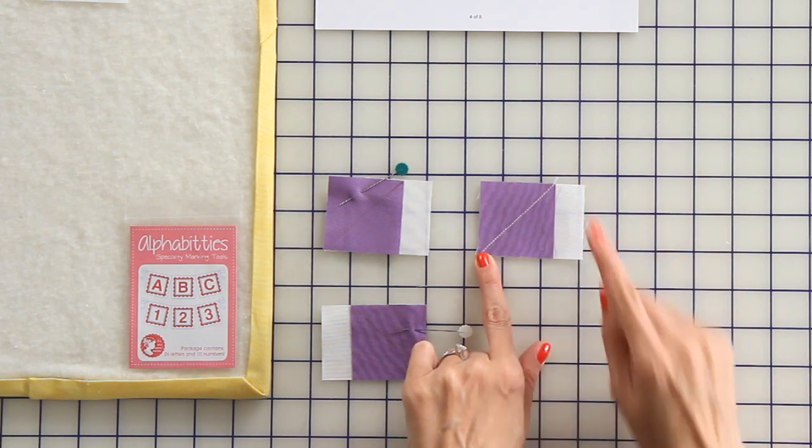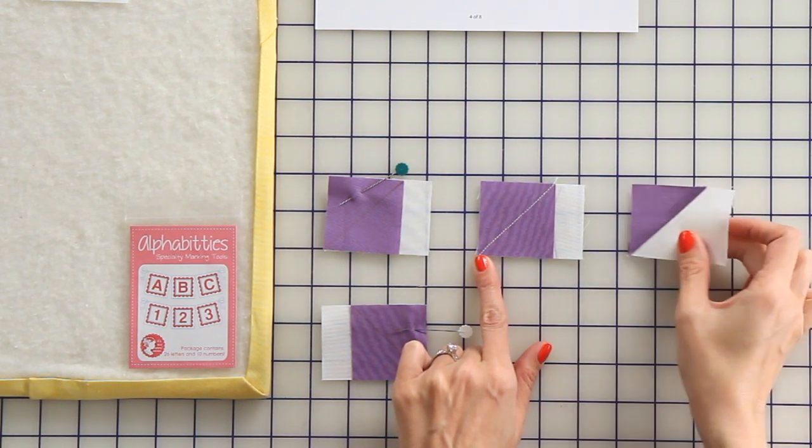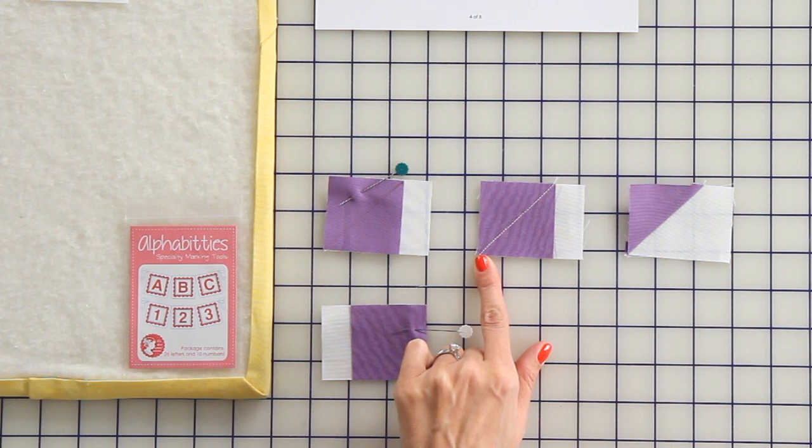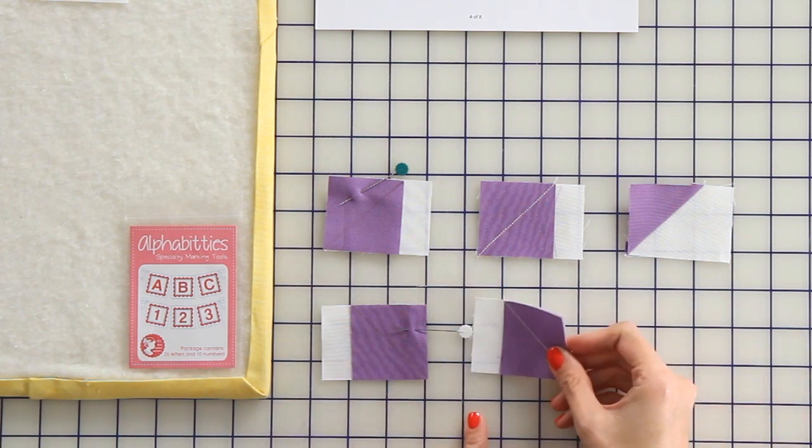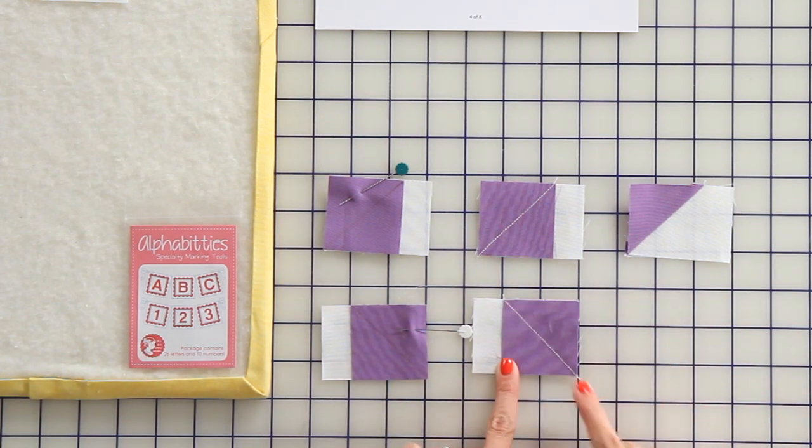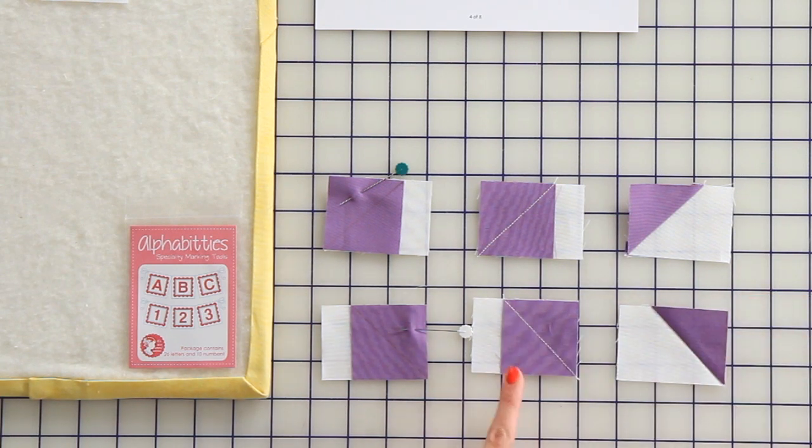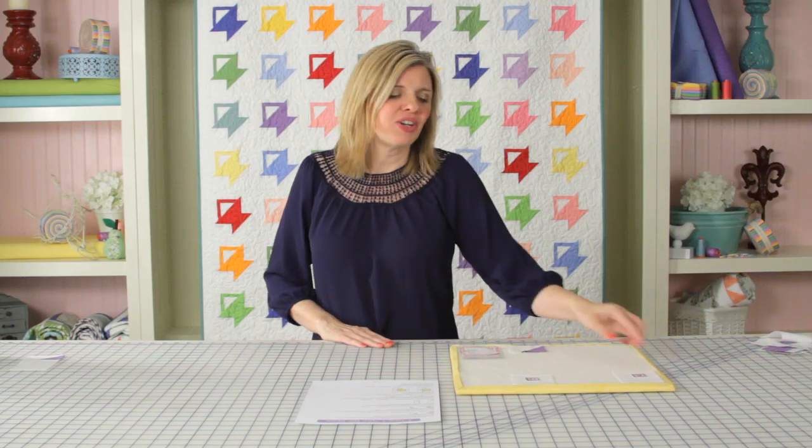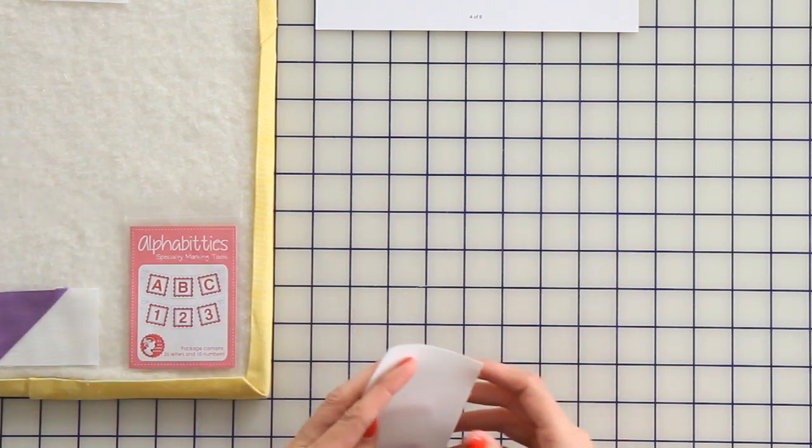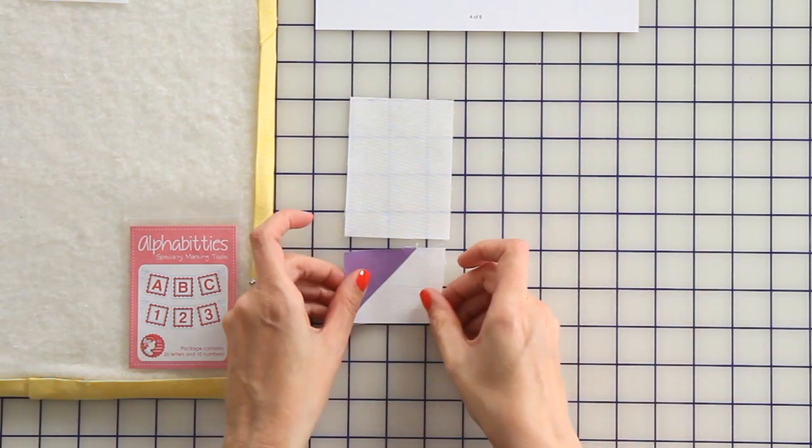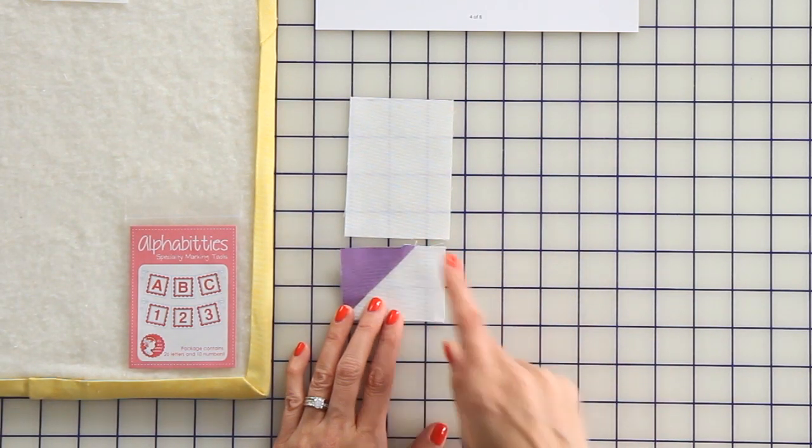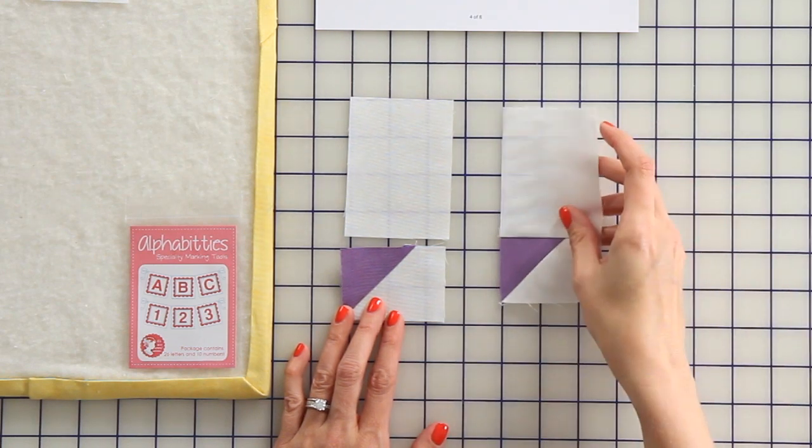Then sew directly on the line and press towards your basket fabric. Now we're going to make our basket side unit. You're going to use one of your fabric A rectangles and your side basket base. You just stitch with a 1/4 inch seam, and it's going to look like this.